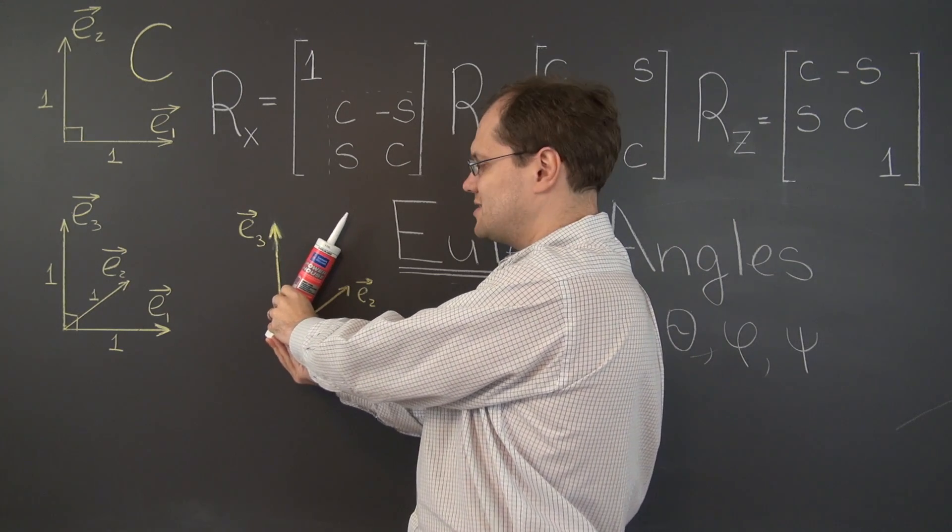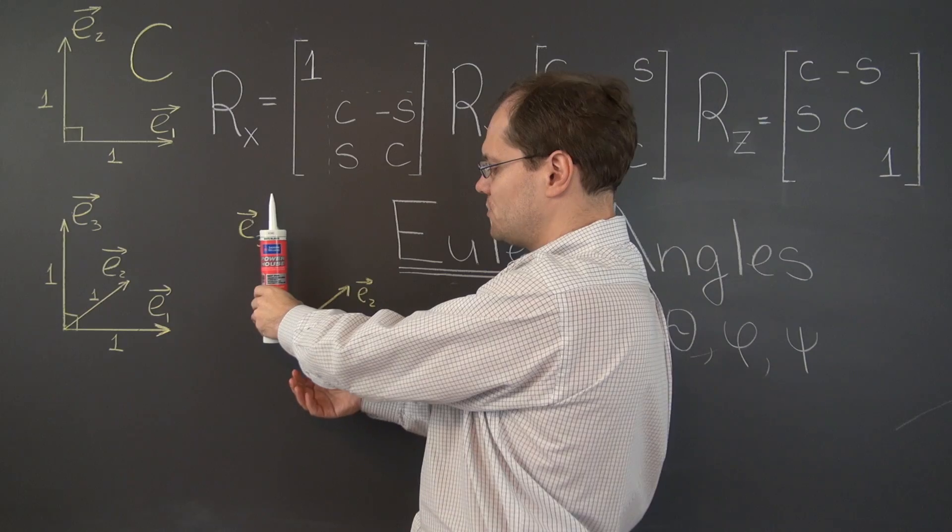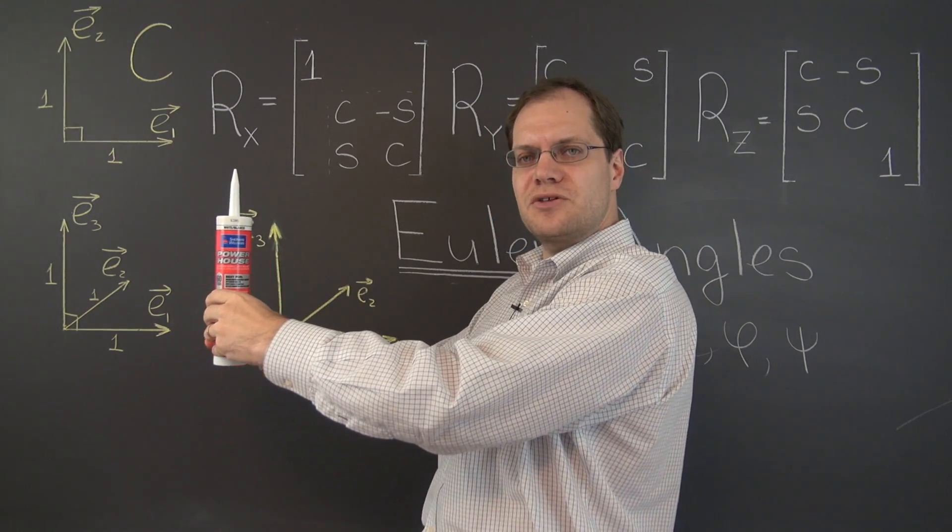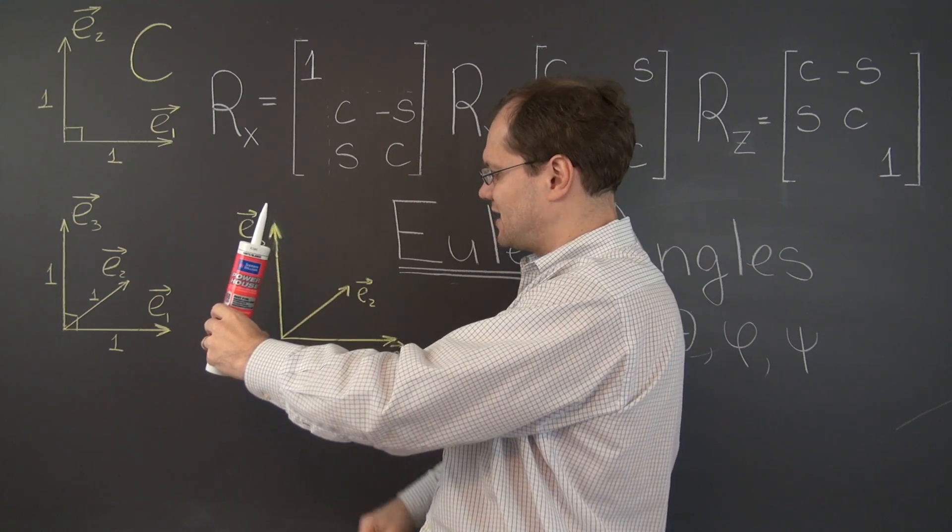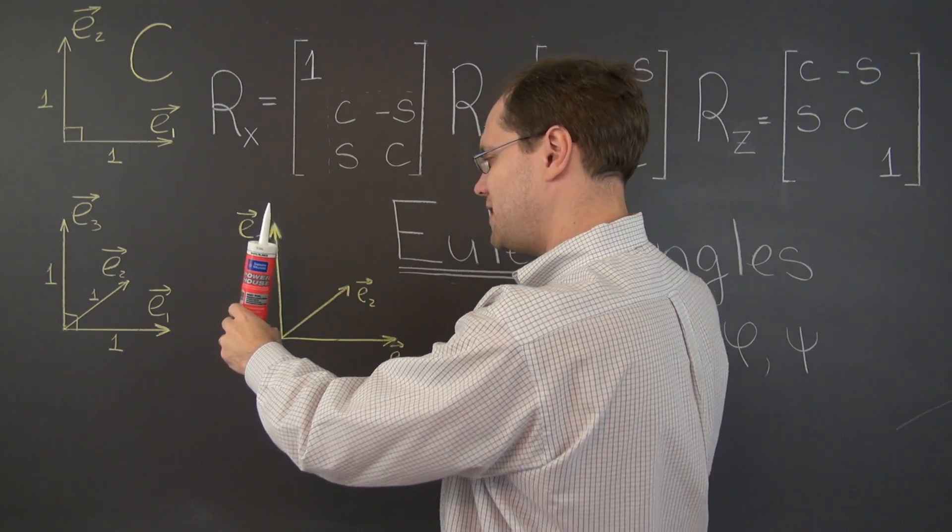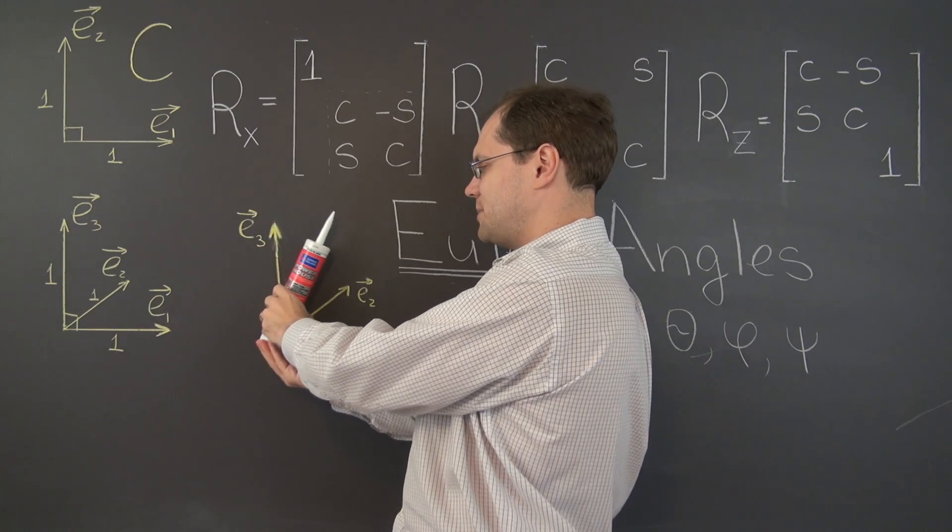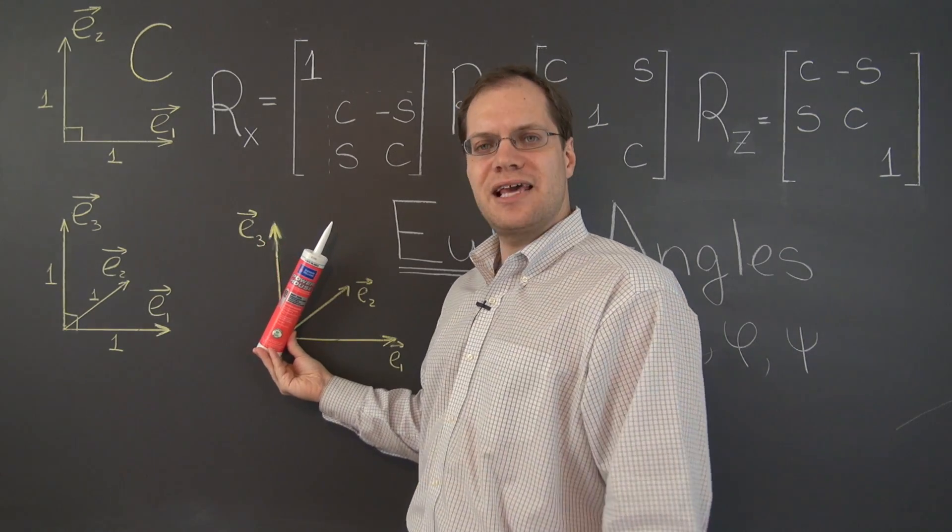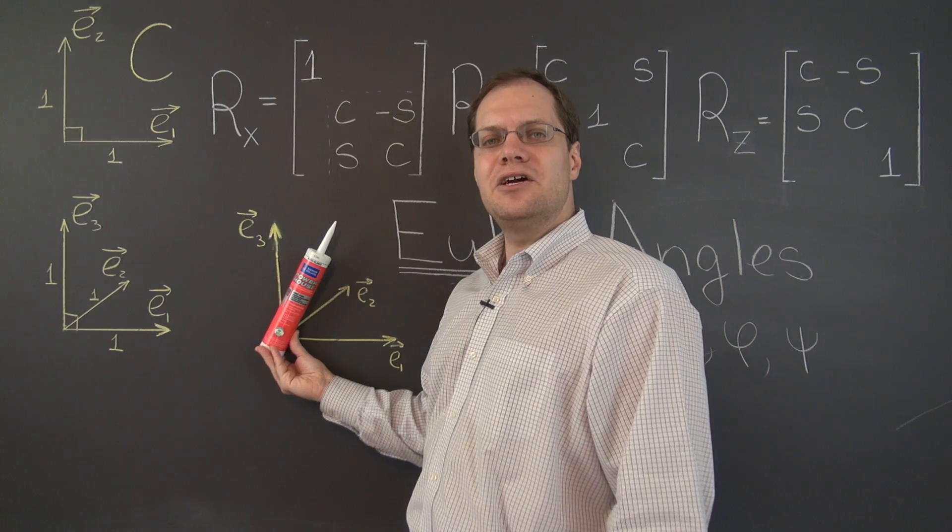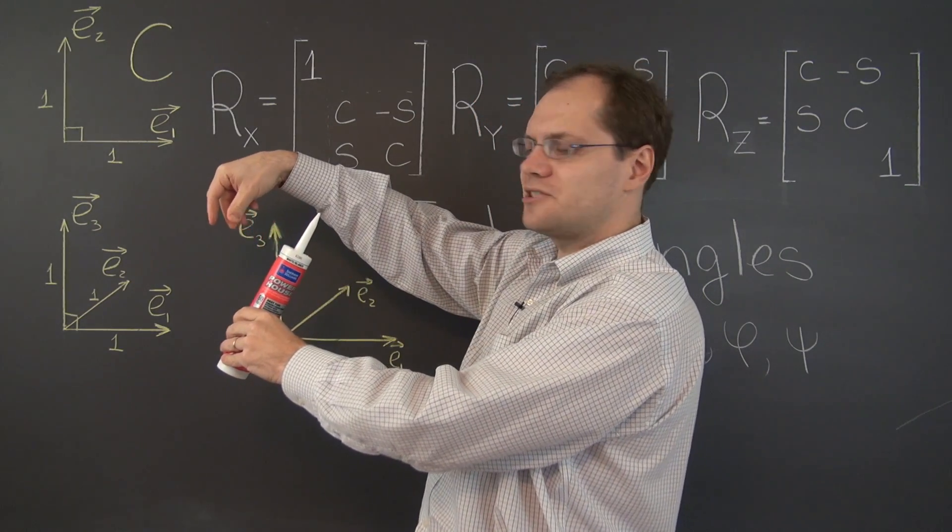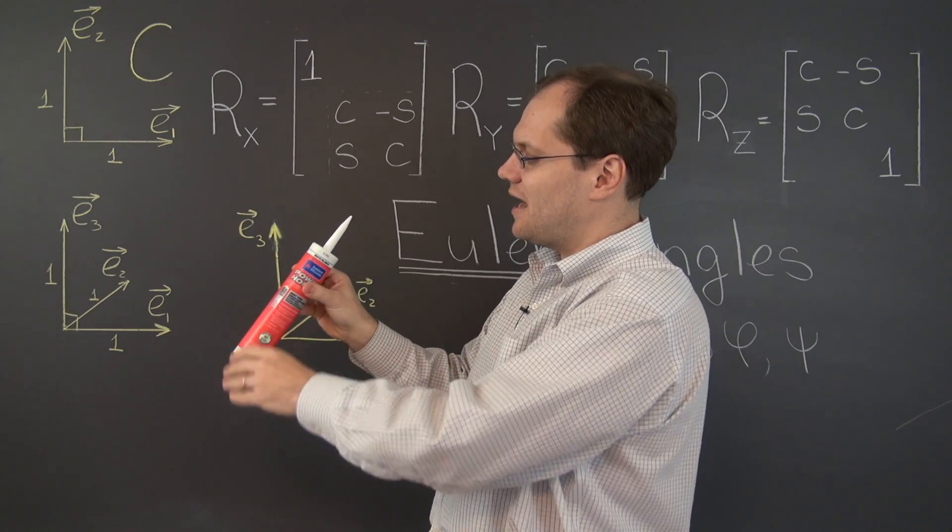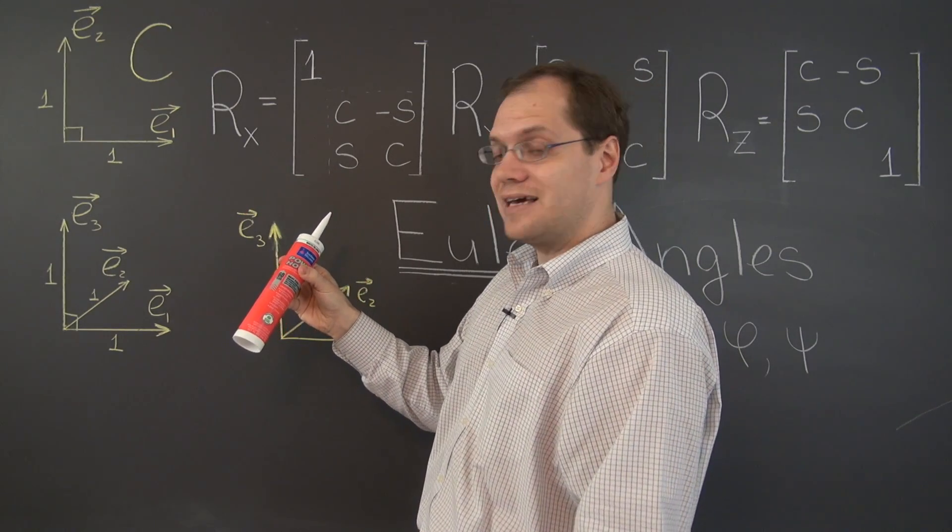So notice that step number one is actually a simple rotation with respect to the y-axis, and actually in the positive direction, exactly what we want. So it will be captured by this matrix. So after step number one, theta is captured correctly, phi equals zero. Then step number two is rotation with respect to the z-axis.